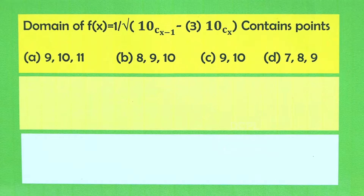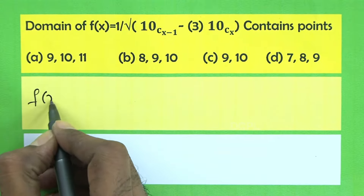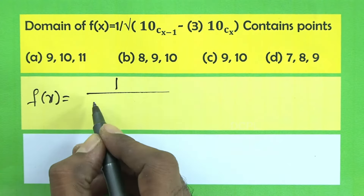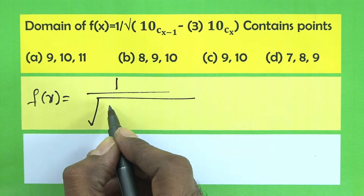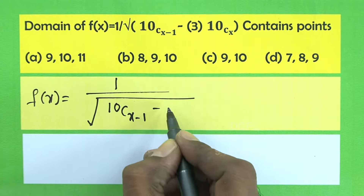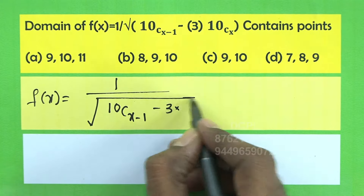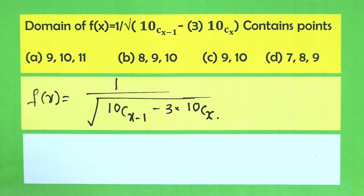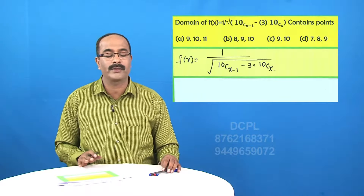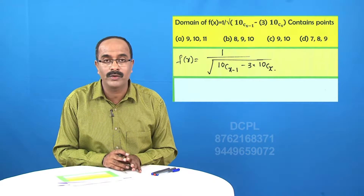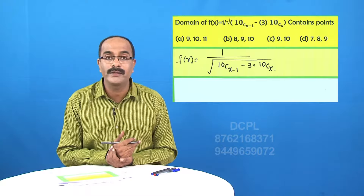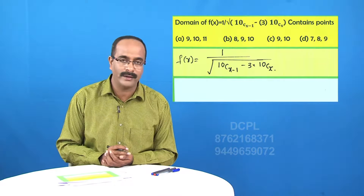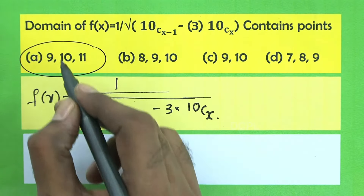Look at the next question. F(x) = 1 / √(10Cx-1 - 3 · 10Cx). The domain contains which points? Since we have 10Cx in the expression, x cannot be greater than 10, so x cannot equal 11. Therefore option A, which contains 11, is ruled out.